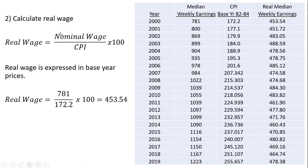Step two is we're going to calculate the real wage. We're going to take the nominal wage and divide it by the consumer price index for that year, and then multiply it by 100. So 781 divided by 172.2 multiplied by 100 — that puts this nominal wage into real wages, and it's 453.54.